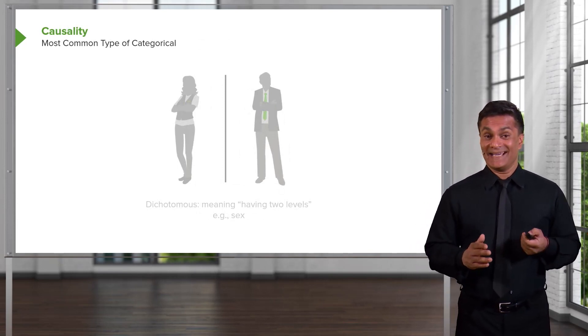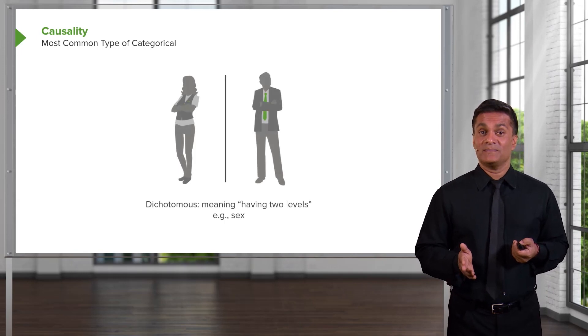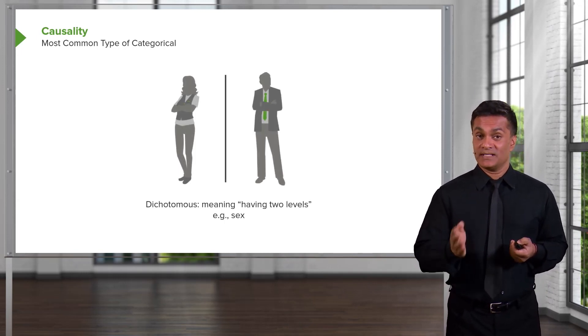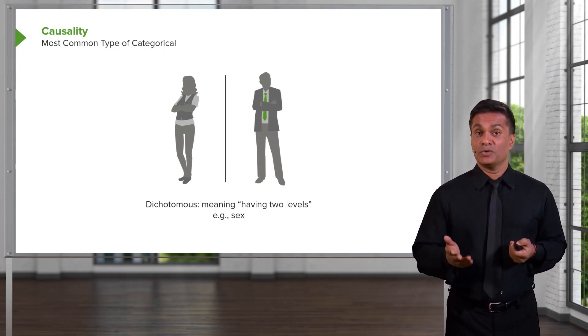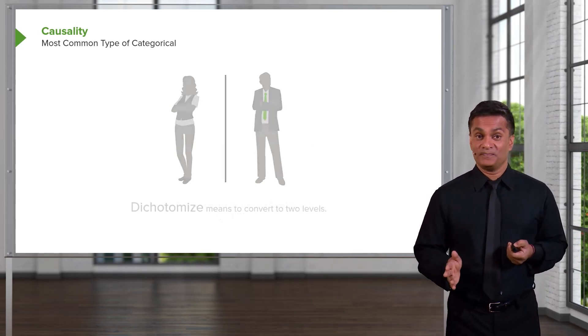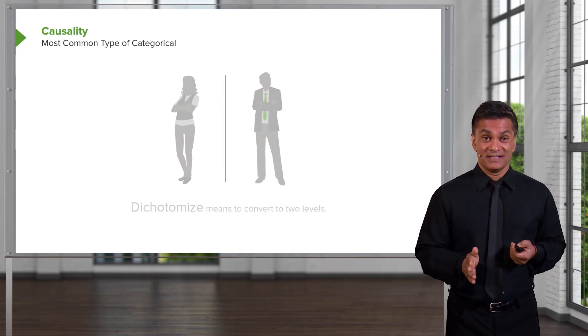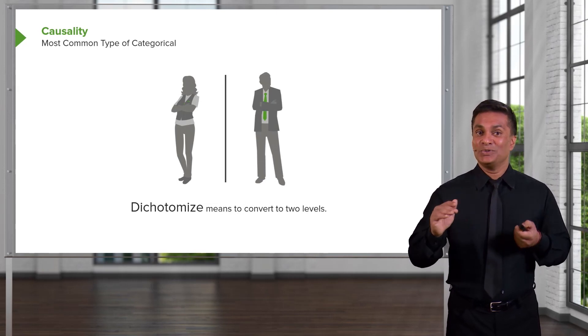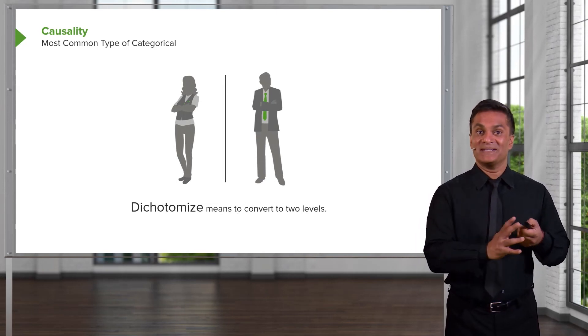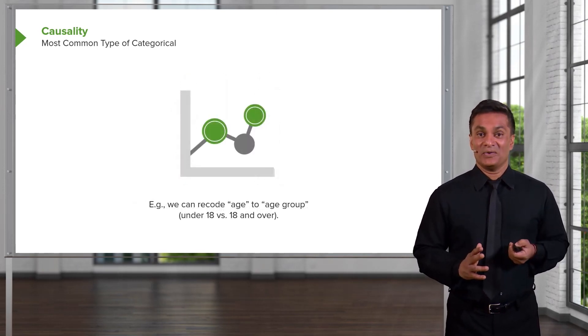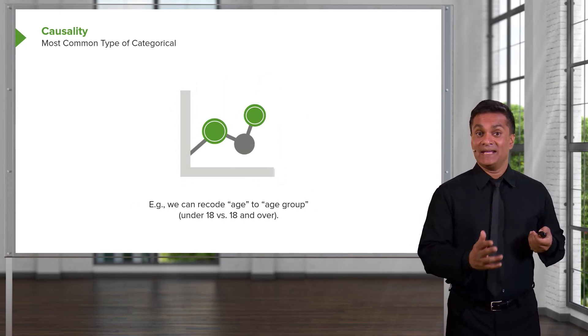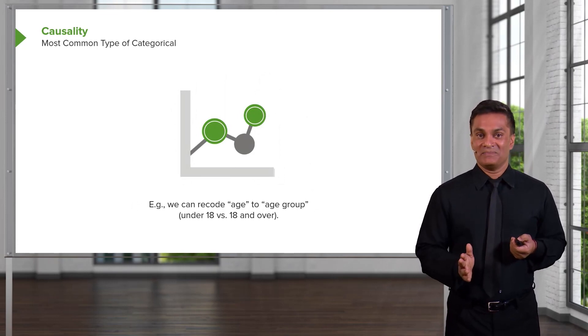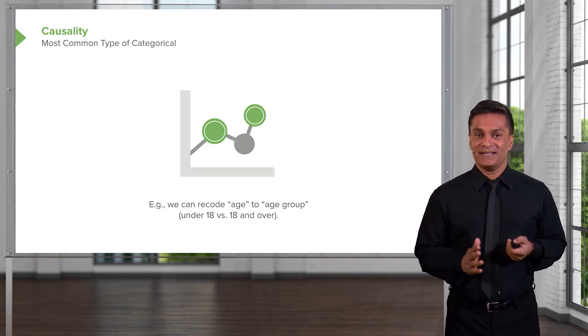I can create a dichotomous categorical variable. That means it has two levels. Dichotomous means having two levels. Like sex, male or female. Or disease presence, yes or no. I can dichotomize an existing continuous variable. In other words, I can create a two-level categorical variable from an existing continuous variable. For example, I can take age, which is a continuous flowing concept, and create age group out of it. Maybe under 18 versus 18 and over.